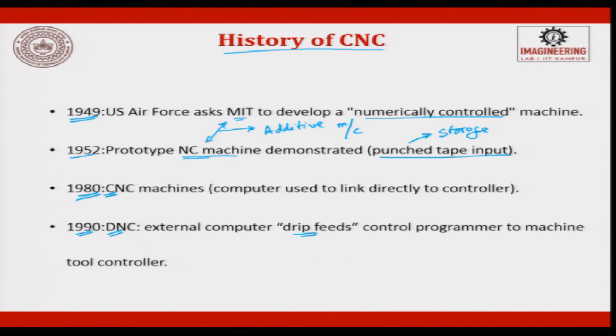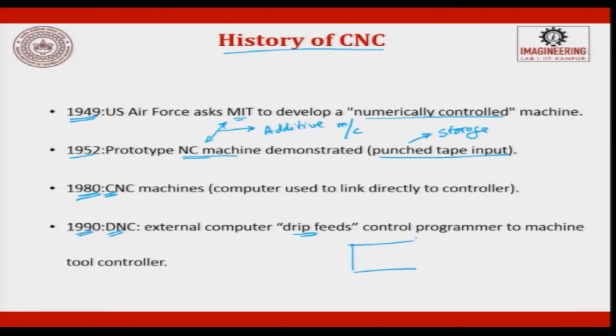With DNC, as parts became more complex and programs became very long, the computer server had memory restrictions. So the program was stored on a main server and only 50 to 500 lines would be called at a time and sent to the CNC machine. The CNC machines are attached to the main server and pull the program from it as needed. Today we also have wireless communication between the server and CNC machines.